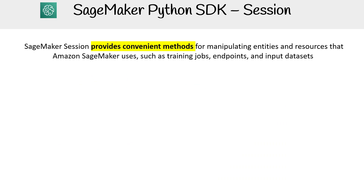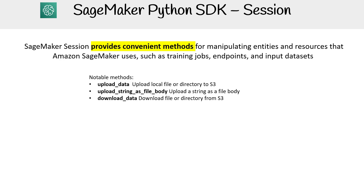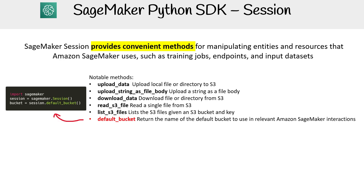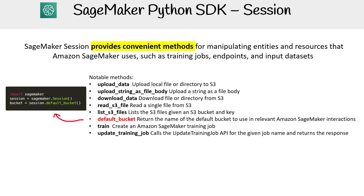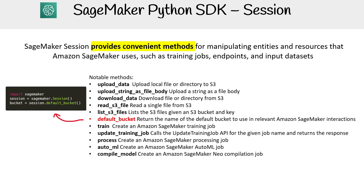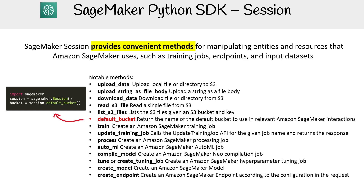Let's talk about sessions. The SageMaker session provides convenient methods for manipulating entities and resources that Amazon SageMaker uses, such as training jobs, endpoints, and input data. Notable methods include: upload data, upload string as a file body, download data, read S3 files, list S3 files, default bucket, train, update training job, process, AutoML, compile model, tune or create tuning job, create model, and create endpoint. The idea is that these are convenient methods that make it really easy, so you don't have to write Boto3 code for this.